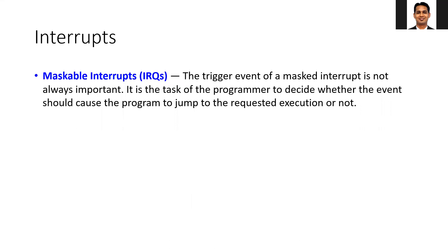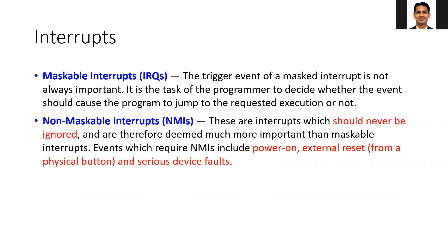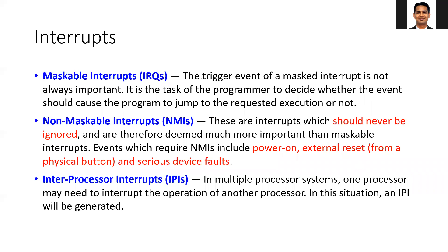There are different types of interrupts. Maskable interrupts may not be important at all times — the trigger event is not always critical, and it is the programmer's task to decide whether the event should cause the program to jump to the requested execution. Non-maskable interrupts are the most critical and should not be ignored — examples include power-on reset, external reset, or device fault. The third type is inter-processor interrupts, where one processor sends an interrupt to another to get its attention.